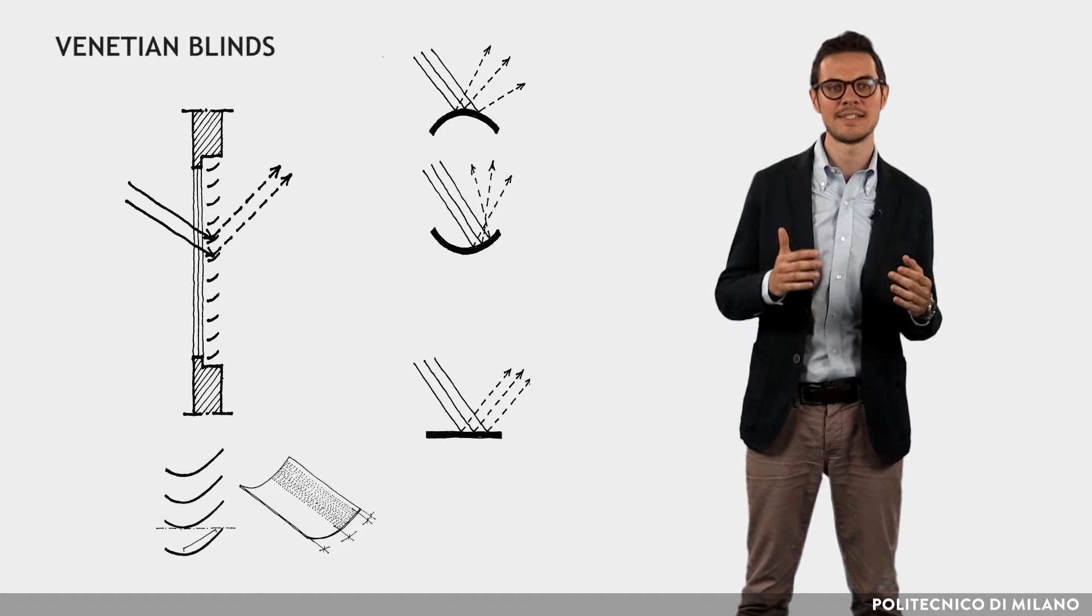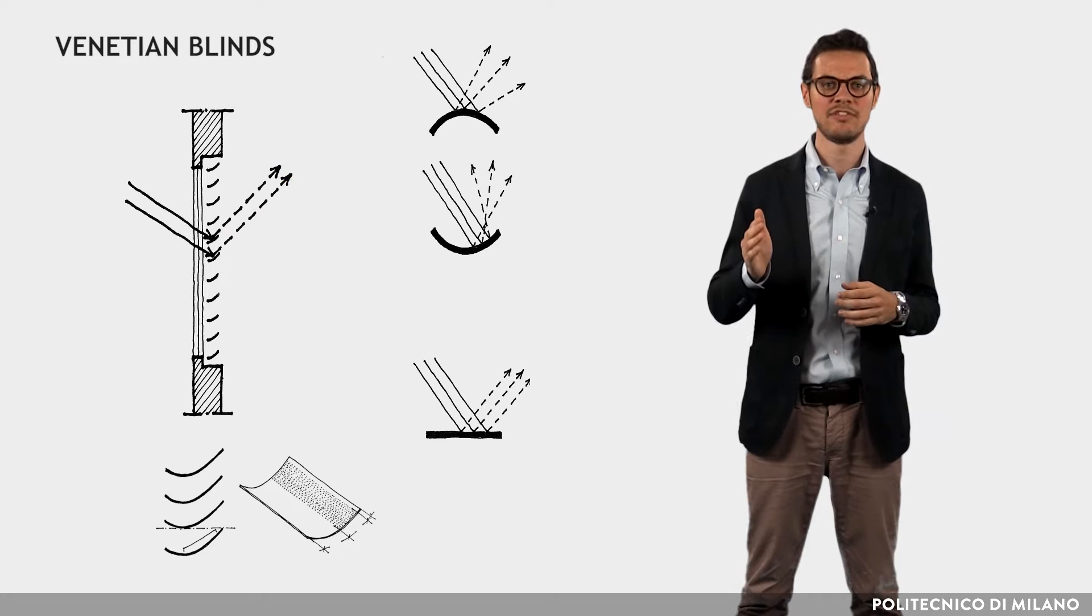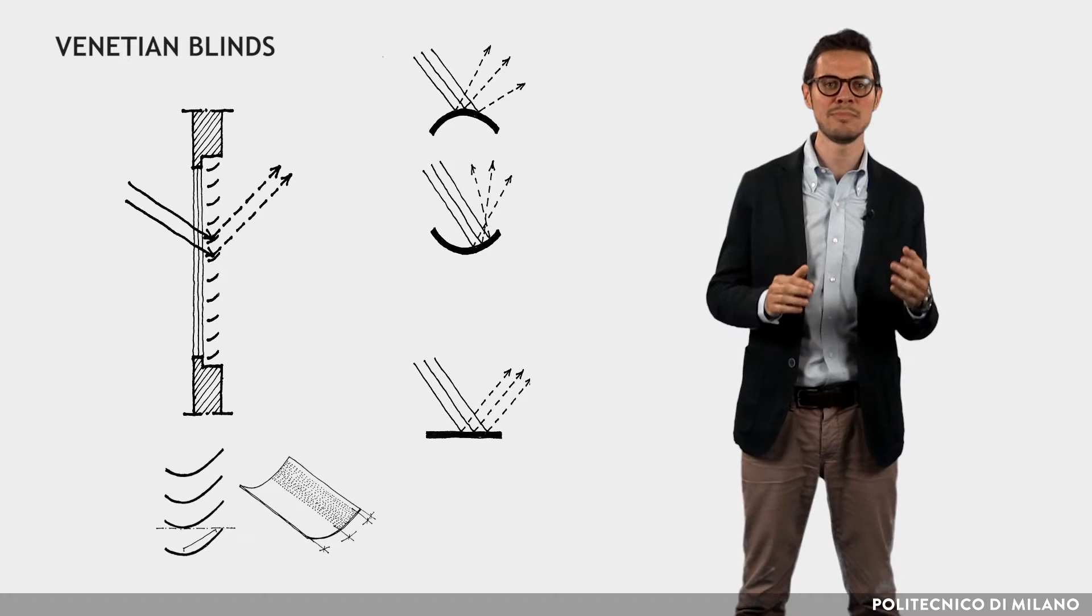Venetian blinds, which are the classical systems to control sunlight, can also be used to redirect light. The blades may be flat or curved, fixed or movable, solid or micro-perforated.